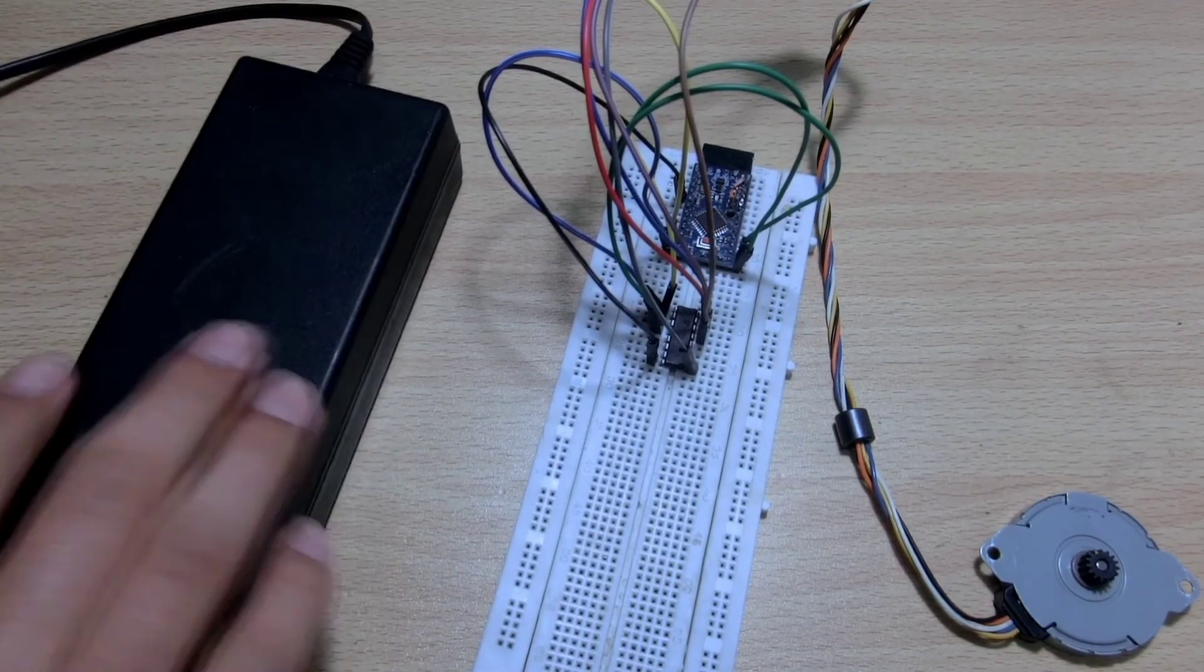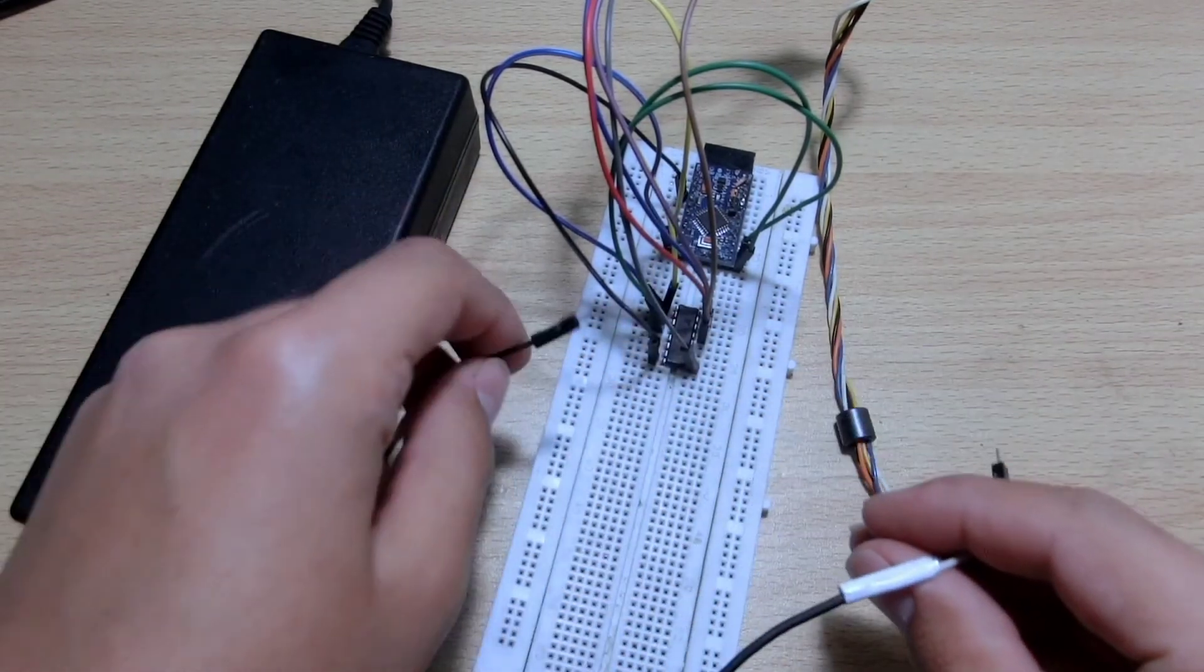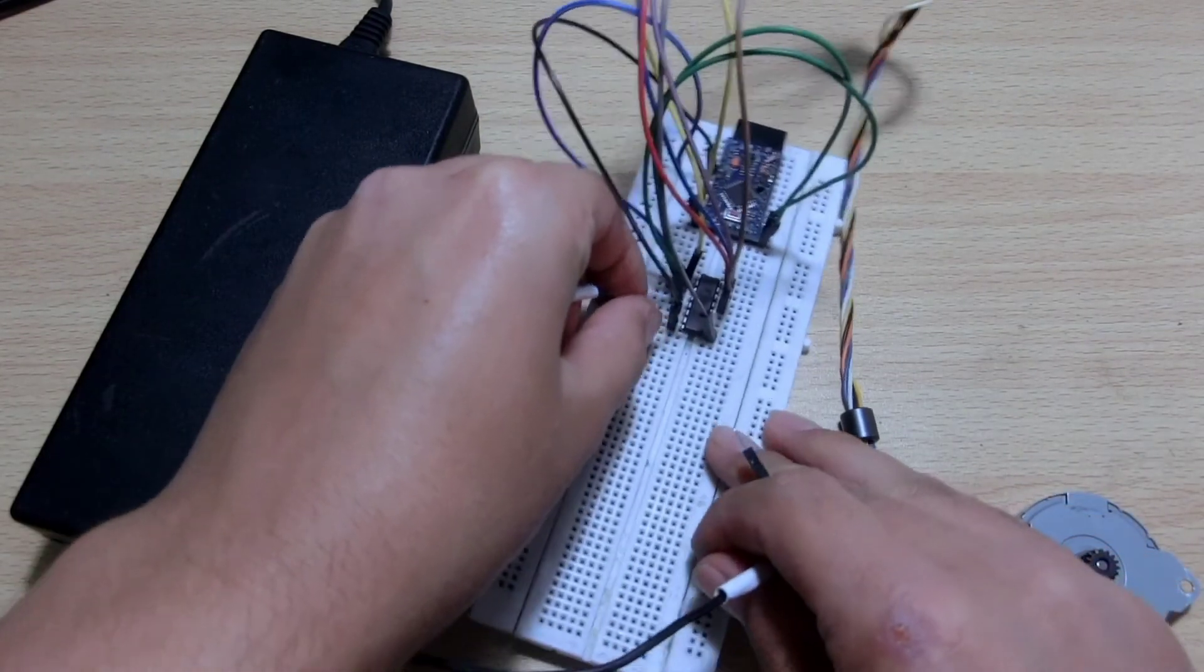Now take your 12V power supply and attach its positive to the positive rail of IC and ground of power supply to ground of IC.